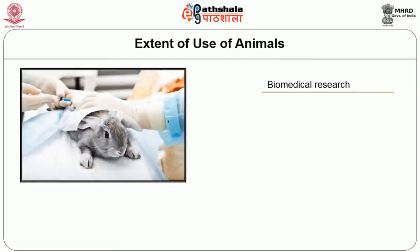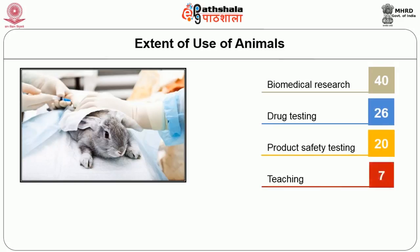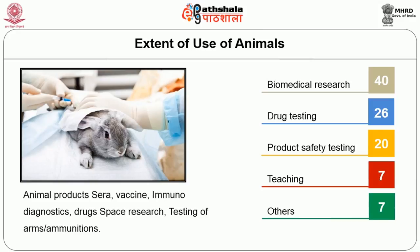Looking at the extent of animal use: 40% of animals used are for biomedical research purposes — developing new diagnostics and treatments. Drug testing and safety product testing account for another 26% and 20%, totaling about 46%. Teaching has come down to just 6 to 7% now. Space research, testing for arms and ammunition, and other areas constitute another 7%. So the majority — almost 80 to 90% — of animals used is for biomedical research and testing purposes.